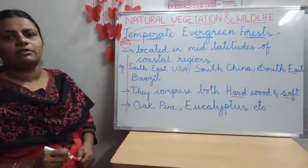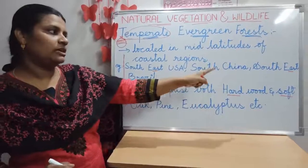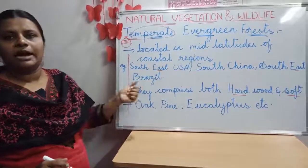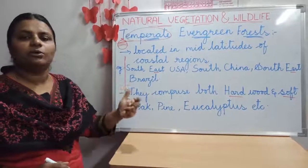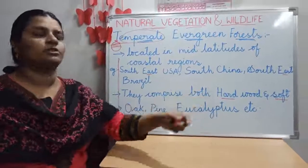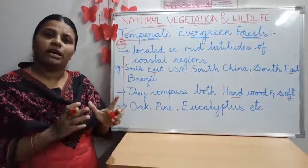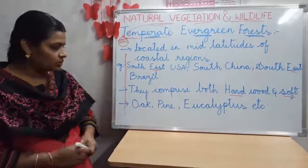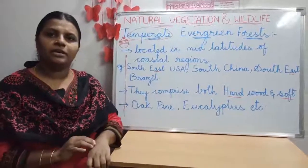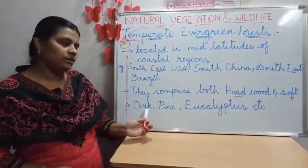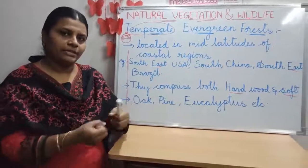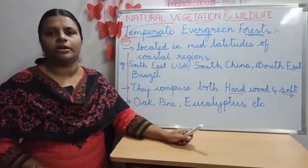Countries where you can find temperate evergreen forests include Southeast USA, South China, Southeast Brazil, etc. Notice that 'South' and 'East' are common — these forests are found in the southeastern margins of countries. These forests comprise both hardwood and softwood trees: oak, pine, eucalyptus, etc. Do you know the eucalyptus plant, which is helpful in making products like Zandu Balm? Pine and oak are softwood trees. Eucalyptus is a commercially important tree from which eucalyptus oil is extracted.